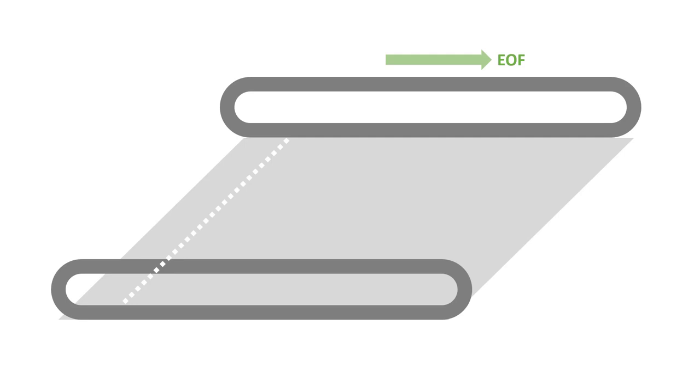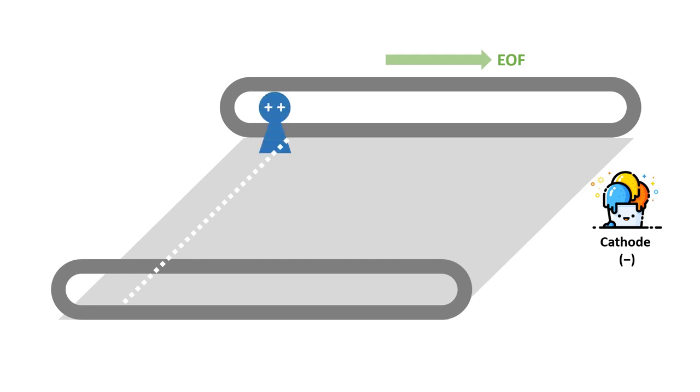We can use the travelator as an analogy for explaining how capillary electrophoresis works. Imagine the travelator is traveling at a constant speed towards the cathode — this represents the electroosmotic flow, the flow of the bulk solution. The cations and anions are like little kids running on the travelator, a phenomenon you can often see in local shopping malls. Imagine the ice cream represents the negatively charged cathode at one end of the travelator. When kid number one, the dication, sees the ice cream, he runs towards it as fast as he can.